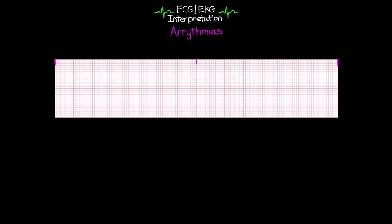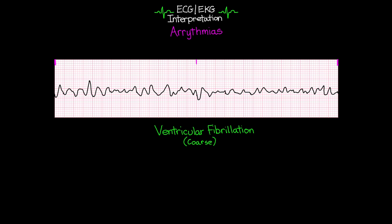Now we're moving on to the last of the ventricular rhythms — ventricular fibrillation, or VFib. This example is coarse VFib. Unlike VTAC, there's no chance that your patient has a pulse with this one. Therefore, this is absolutely a lethal rhythm and will require immediate intervention on your part — think ACLS and coding your patient. Ventricular fibrillation is just that: fibrillation of the ventricles. Just like atrial fibrillation, those ventricles are not having an organized contraction — they're just quivering or fibrillating — and you're not getting any sort of blood flow out of the heart.